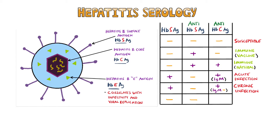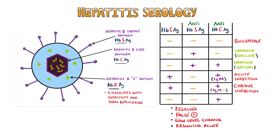Some people will show a negative hepatitis B surface antigen, a negative anti-hepatitis B surface antibody, but a positive anti-hepatitis B core antibody. In this case, the interpretation is unclear, but the possibilities include a resolved infection, a false positive anti-hepatitis B core antibody, a low-level chronic infection, or a resolving acute infection.